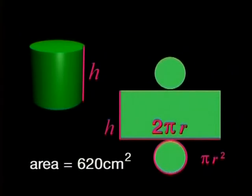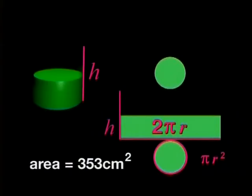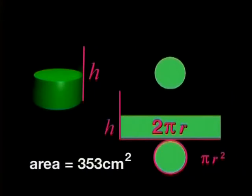So this cylinder has a surface area of about 620 square centimeters. This cylinder with half the height of the other one has a surface area of 353 square centimeters. That's more than half of 620. Although the height is halved, that doesn't make the surface area half of the bigger one.